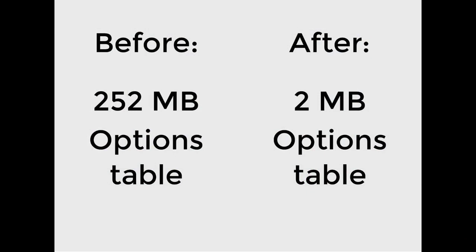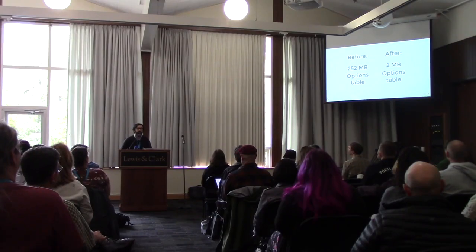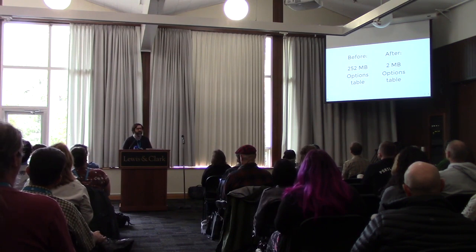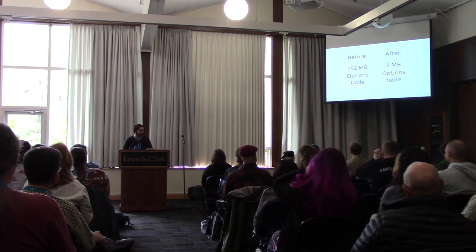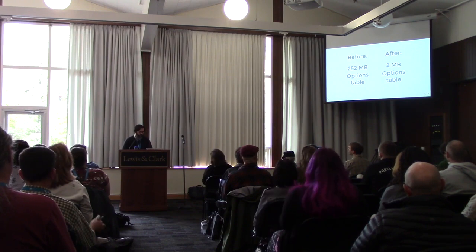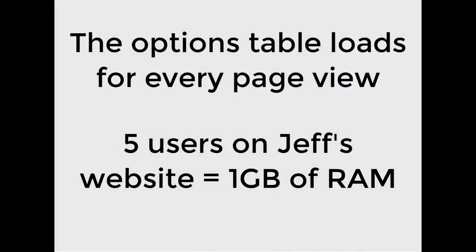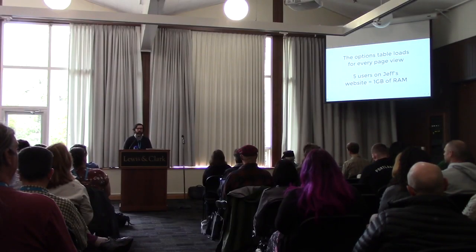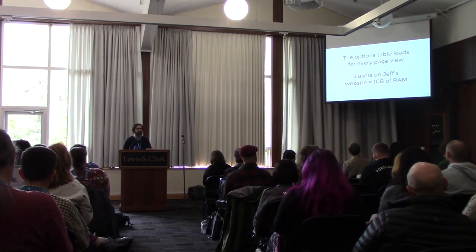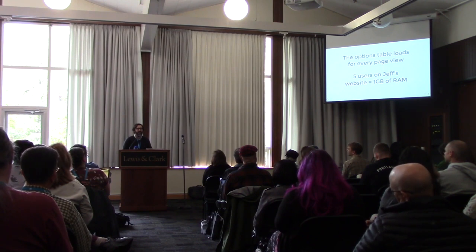It left almost 300 megabytes of stuff sitting in the database. I went in, cleaned it up in about five minutes, and saved his website. The options table loads your settings for WordPress — so anytime someone visits any page on your site, it's loading the options table. It's super important not to have 300 megabytes of stuff in there loading every time. Jeff's VPS has one gigabyte of RAM, so if he tweeted a link and five people clicked at the same time, it would crash his website.